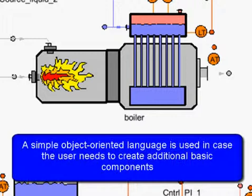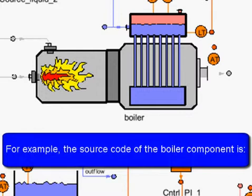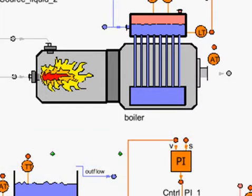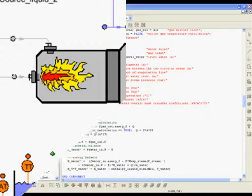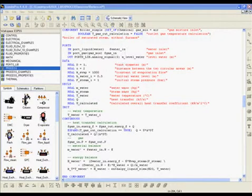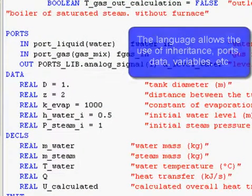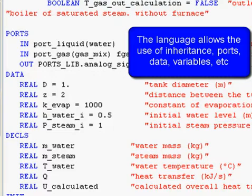A simple object-oriented language is used in case the user needs to create additional basic components. For example, the source code of the boiler component. The language allows the use of inheritance, ports, data variables, etc.